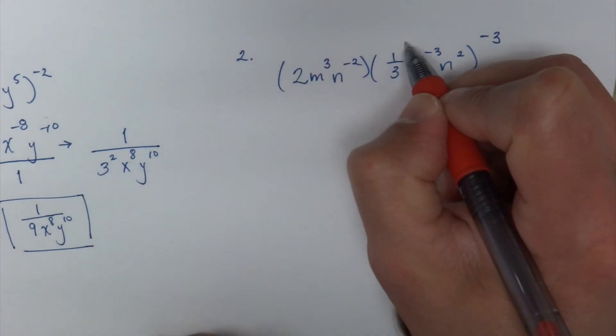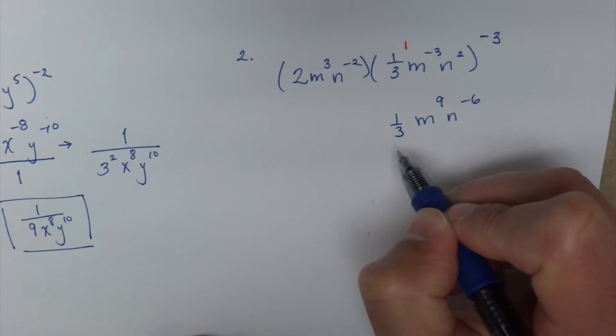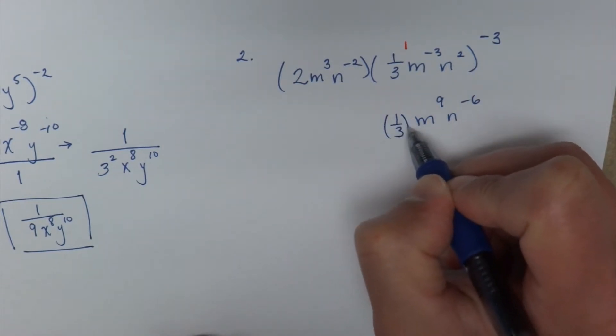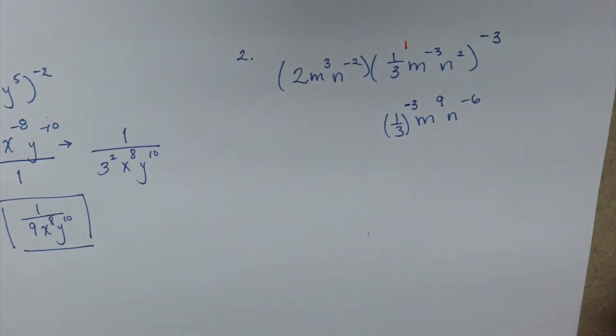I'm going to put a 1 and 1 times negative 3 becomes 1/3 and I'm just going to put this in parenthesis here, negative 3 power.